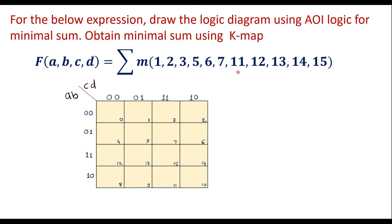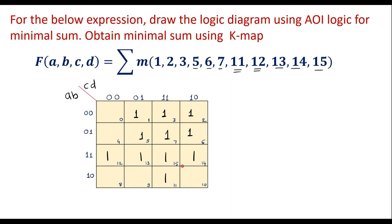The minterms where we enter 1 are: cell 1, 2, 3, 5, 6, 7, 11, 12, 13, 14, and 15. In the remaining cells we enter zeros, because no don't cares are given — so all other cells are 0.